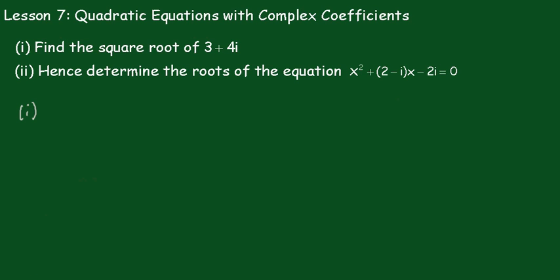Lesson 7: quadratic equations with complex coefficients. In Part 1, we have to find the square root of 3 plus 4i. So I'm going to let z equal the square root of 3 plus 4i. Squaring that, we get z squared equals 3 plus 4i.